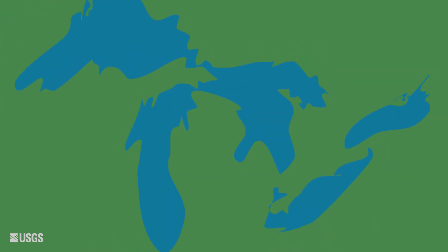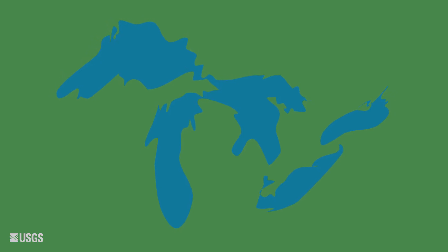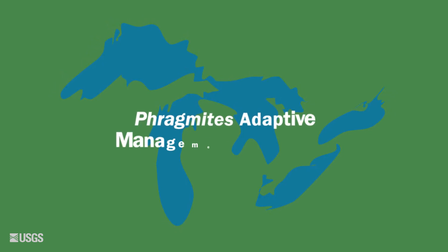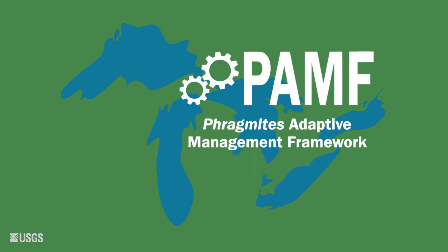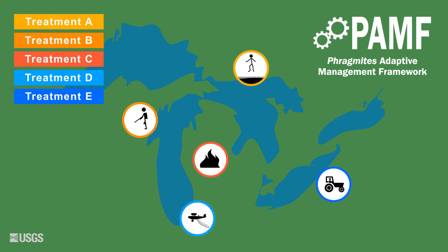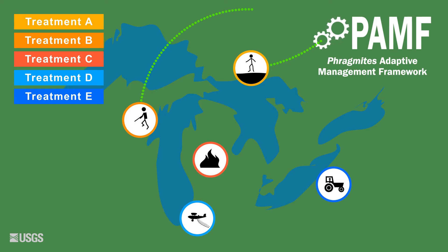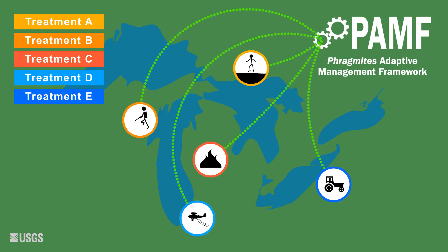To collectively leverage and learn from on-the-ground control programs, the Great Lakes Phragmites Collaborative developed the Phragmites Adaptive Management Framework, or PAMF. This free program uses a citizen science strategy to analyze outcomes from all participants' Phragmites control efforts under an adaptive management approach. The underlying goal is to reduce uncertainty and improve the effectiveness and efficiency of future management actions.